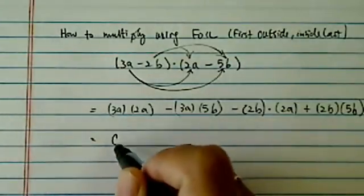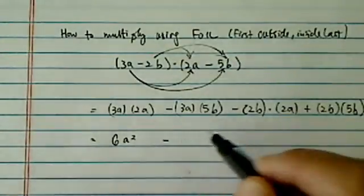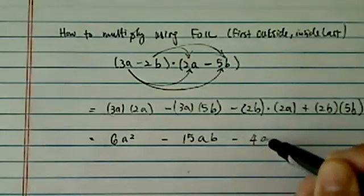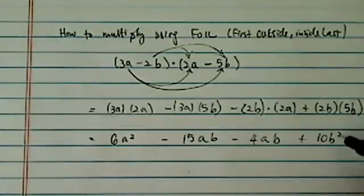So here we have 6a squared minus 15ab minus 4ab and then plus 10b squared.